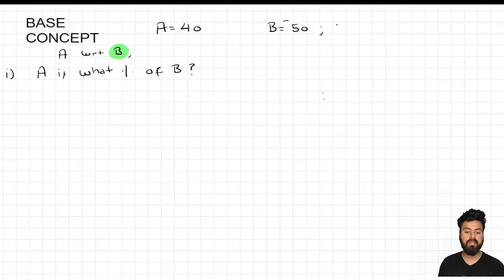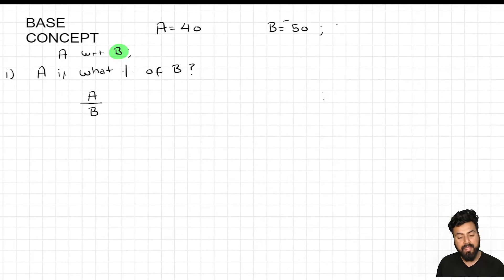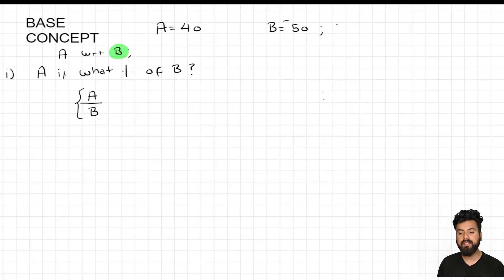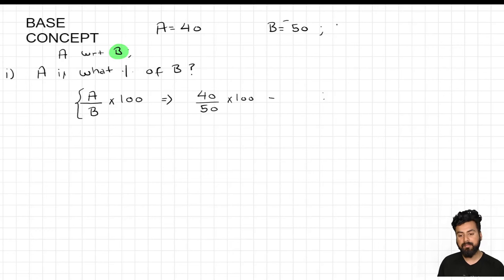Let us write down the fraction. To calculate 'A is what percent of B,' I write the value of a in the numerator, and since I am comparing a with respect to b, I write b in the denominator. To convert a fraction to percentage, we multiply by 100. Plugging in values — a is 40, b is 50 — 40 divided by 50 multiplied by 100 gives the answer as 80%.